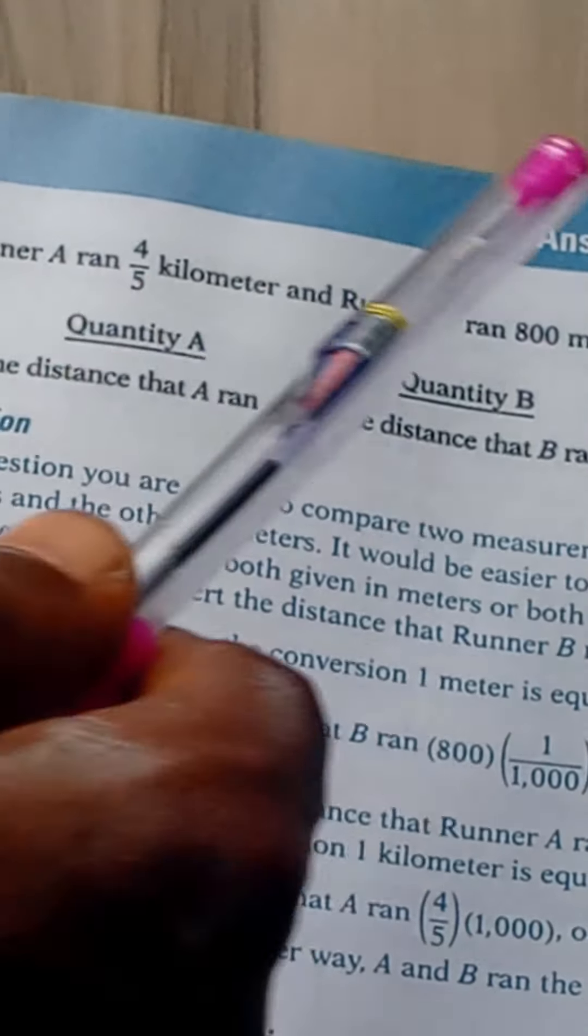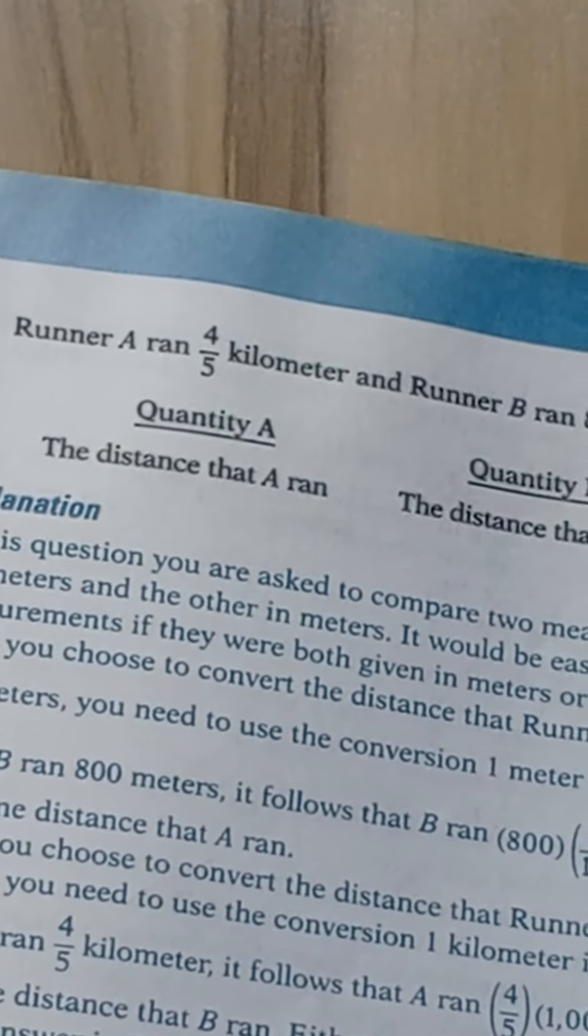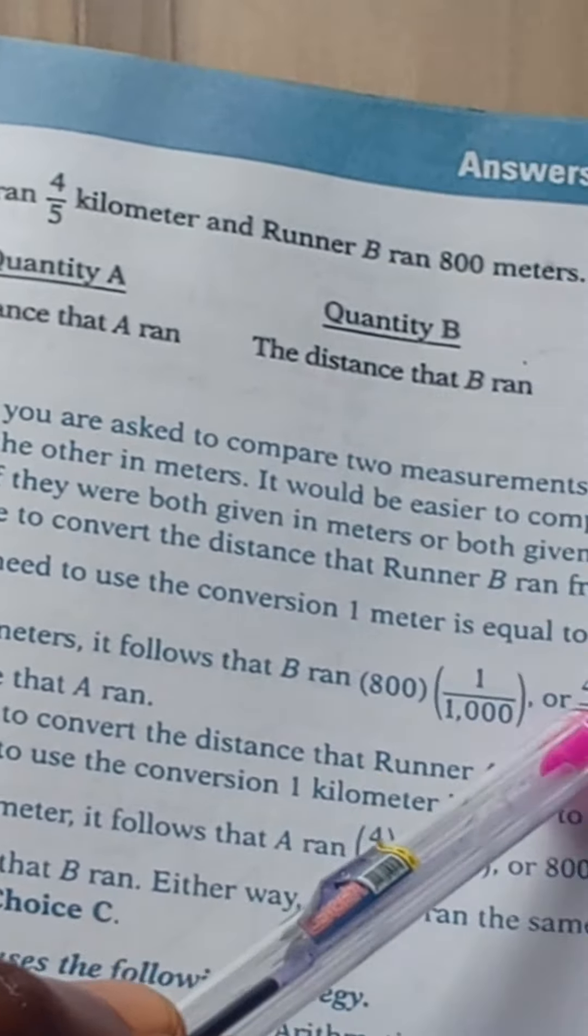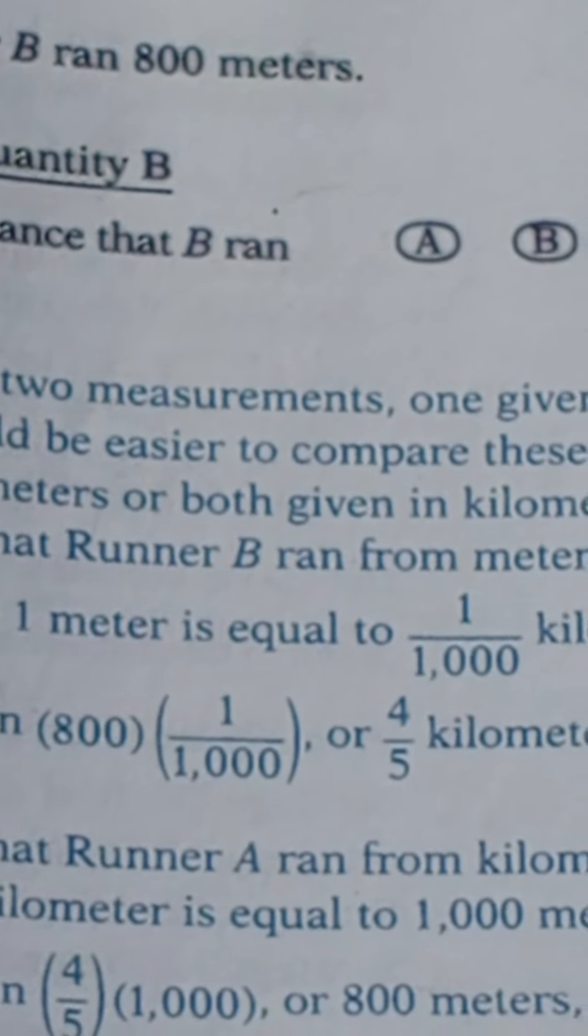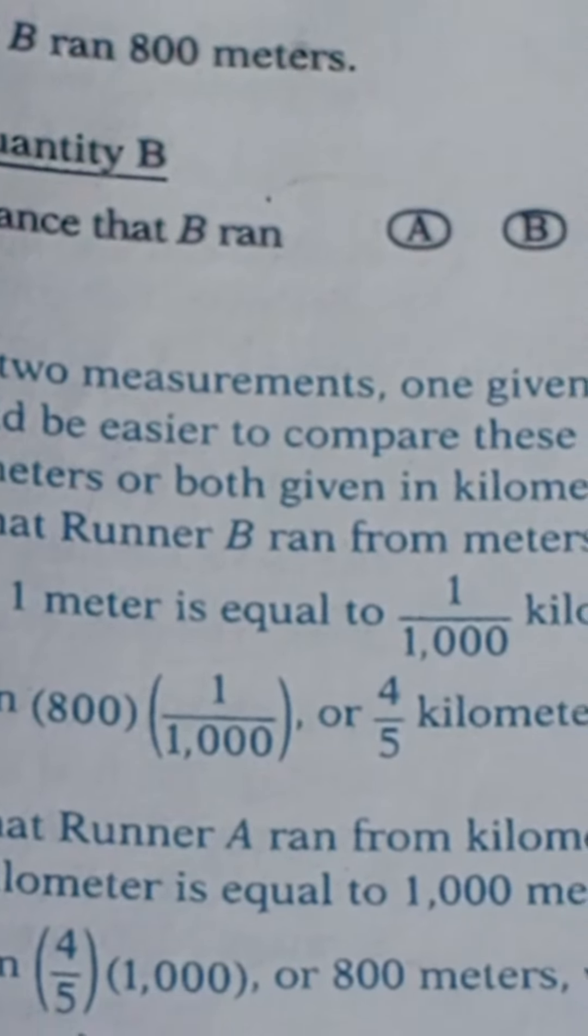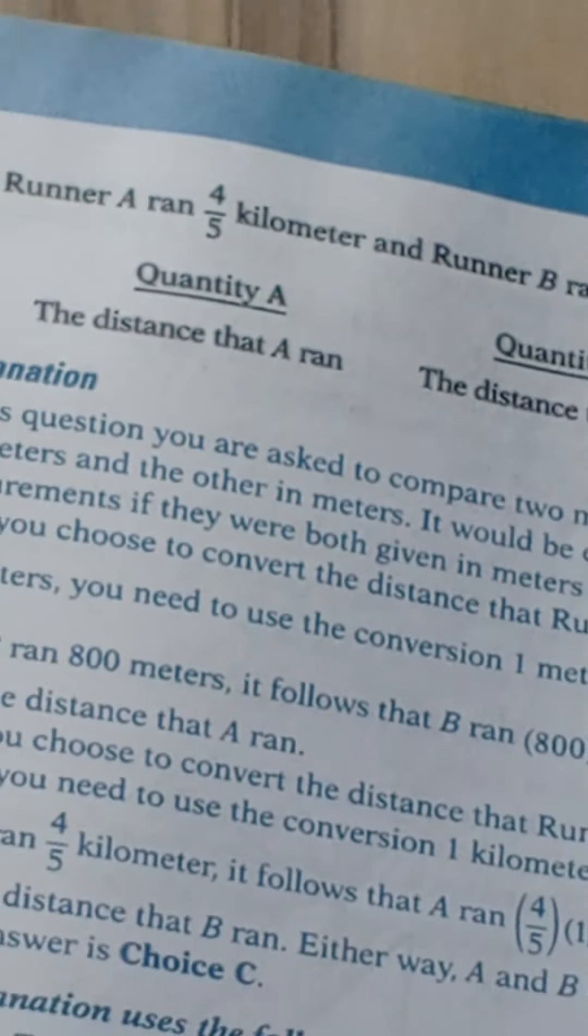So to change kilometer to meters, we multiply by 1,000. You multiply 4/5 by 1,000 and that gives us 800. So 4/5 kilometer is the same thing as 800 meters.